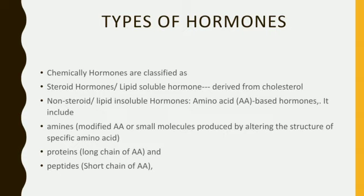We now come to the different types of hormones. Generally, there are two types. Chemically, hormones are classified as steroid hormones and non-steroidal hormones. Steroid hormones, also called lipid-soluble hormones, are derived from cholesterol. Non-steroid hormones include amino acid-based hormones, which are further divided into three types: amines — modified amino acids or small molecules produced by altering the structure of specific amino acids; proteins — long chain amino acids; and peptides — short chain amino acids.